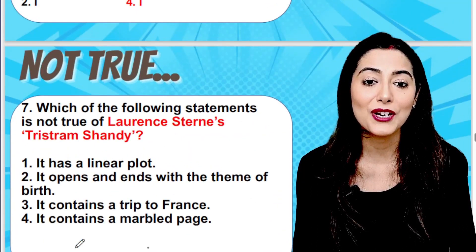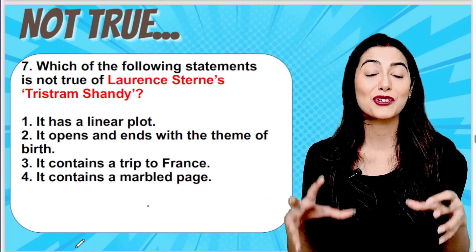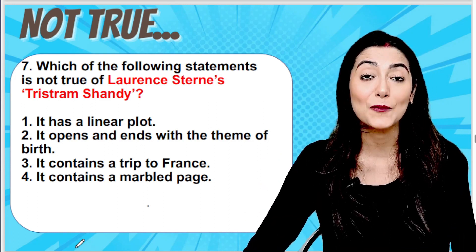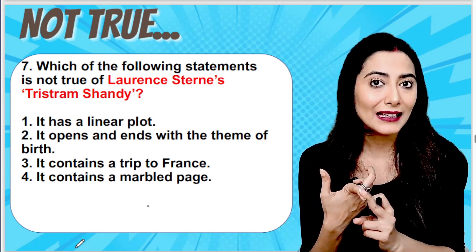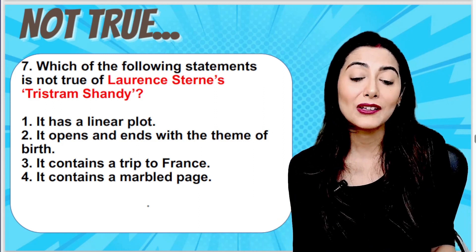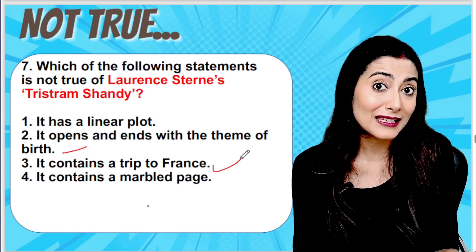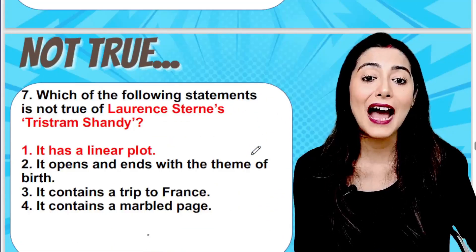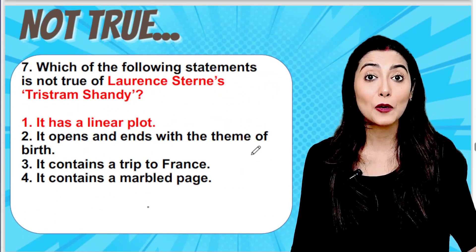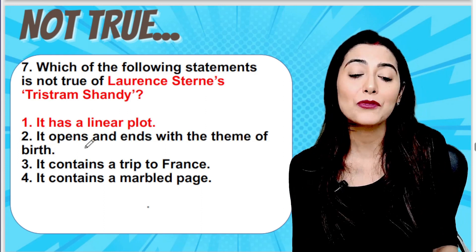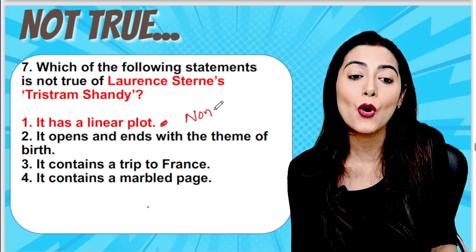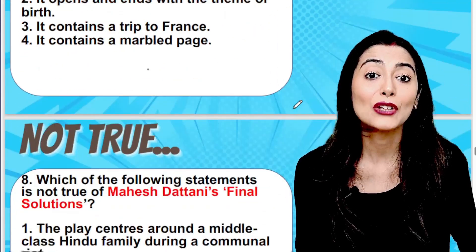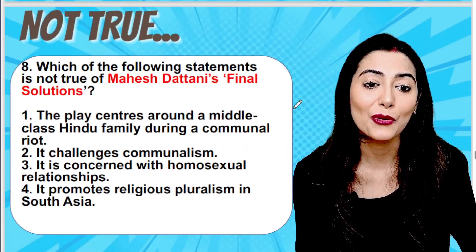The next work is Tristram Shandy by Laurence Sterne. The question asks which statement is not true. Options include: was it a linear plot, was it open-ended with the theme of birth, did it involve a trip to France, or does it contain a marble page? All are true except point one — that it has a linear plot. Tristram Shandy is famous for its non-linearity, showing the story in a very unstructured, non-linear way.